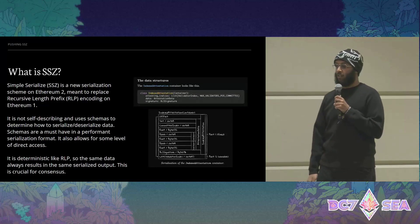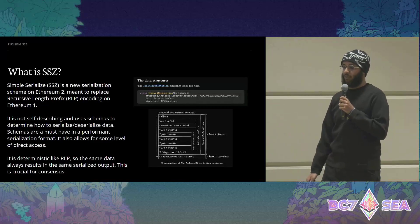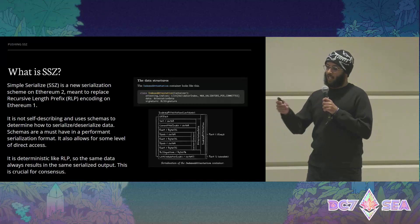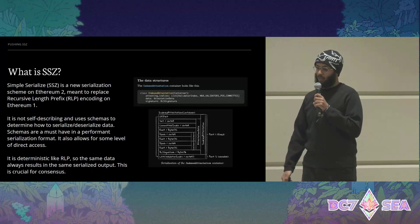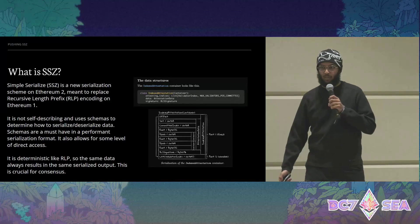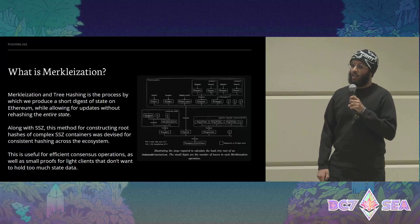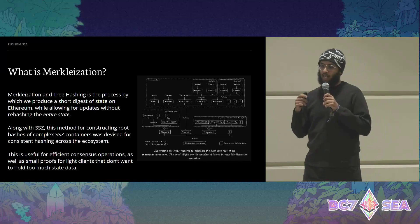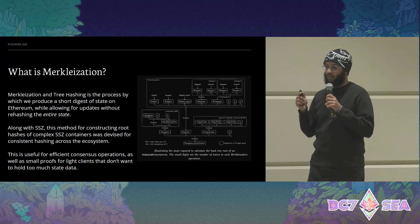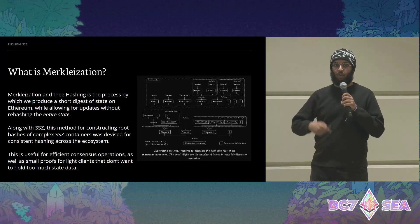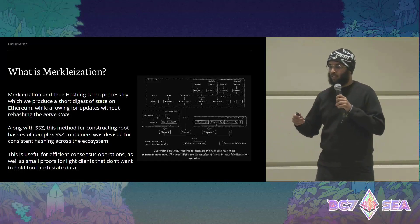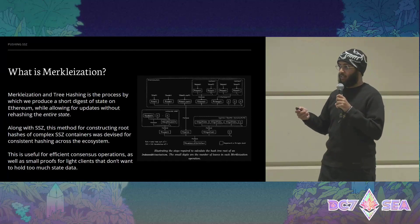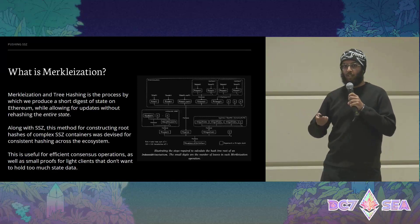SSZ is the serialization scheme on Ethereum 2, meant to replace RLP on the execution layer. It has a few improvements like schemas, which are a must-have in a performance system. Merkleization is the process in which we generate a short digest of the state while allowing for updates without rehashing the entire state. This is useful to generate small proofs of the content inside a beacon block for clients that don't want to hold too much state data.